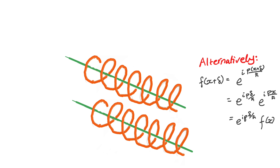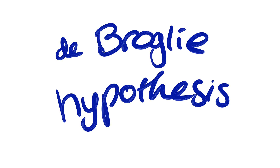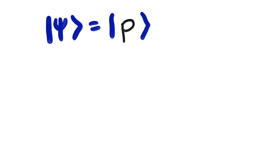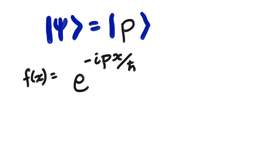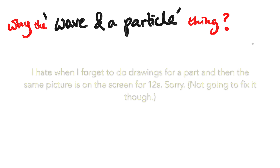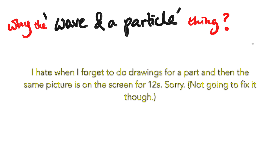Now we've actually derived the de Broglie hypothesis. All it actually said was: the wave function of a particle with one particular momentum is a complex exponential with this wavelength. Then, why the confusion about wave-particle duality — where people say that the particle acts like a wave sometimes and a particle sometimes?